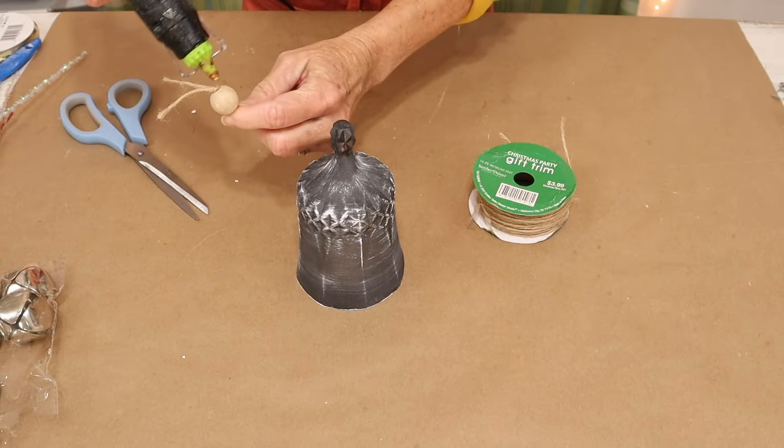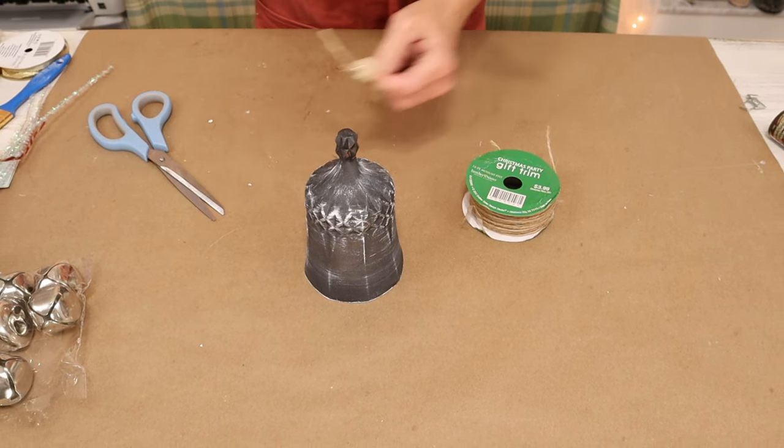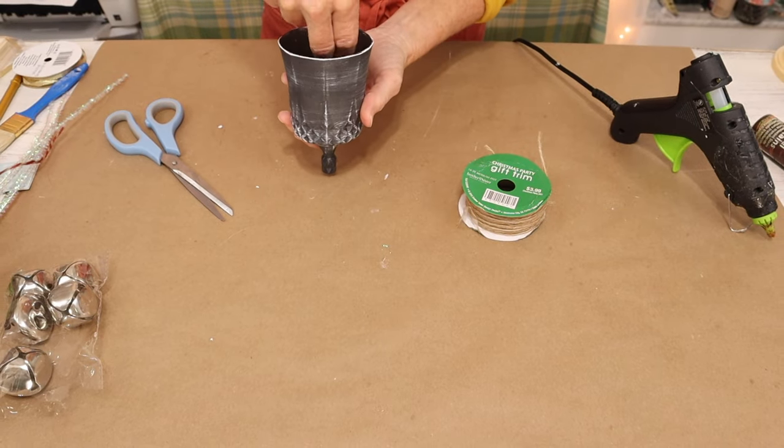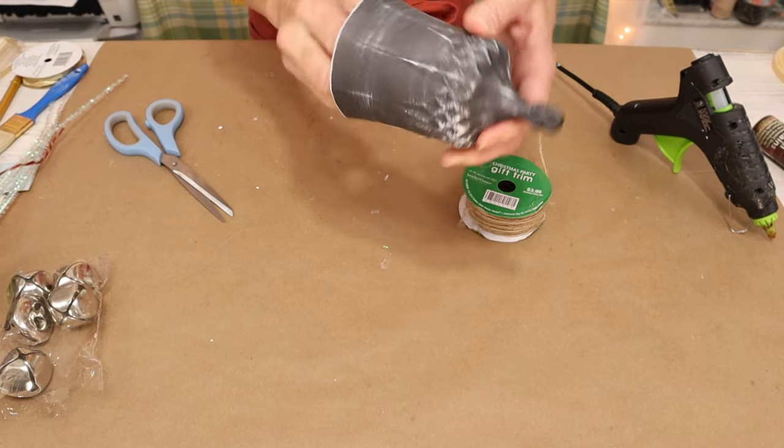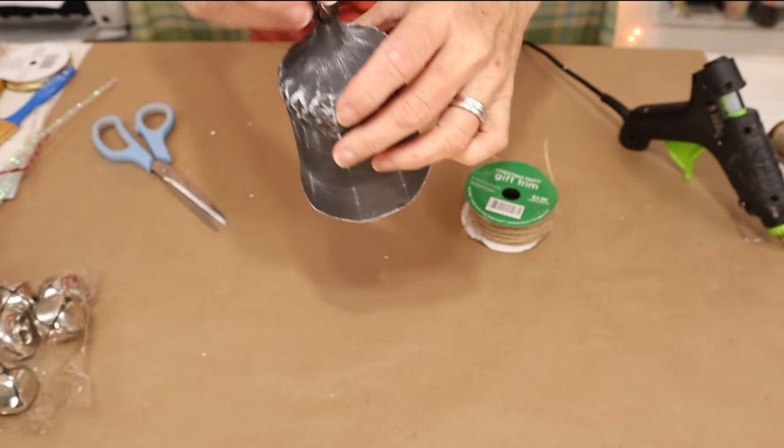Now this next step is a little tricky. Just be careful. You're going to put some hot glue on the top part of the bead and then you're going to stick it inside of your wine glass, just making sure not to touch that hot glue. Actually in retrospect I should have used a pair of tongs.